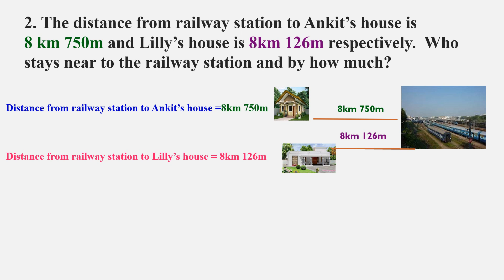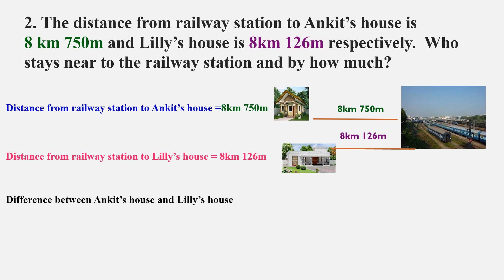But there is one more part of the question to be solved: who stays near to the railway station and by how much? To find this, we have to find the difference of the distance between the two houses — the difference between Ankit's house and Lily's house.